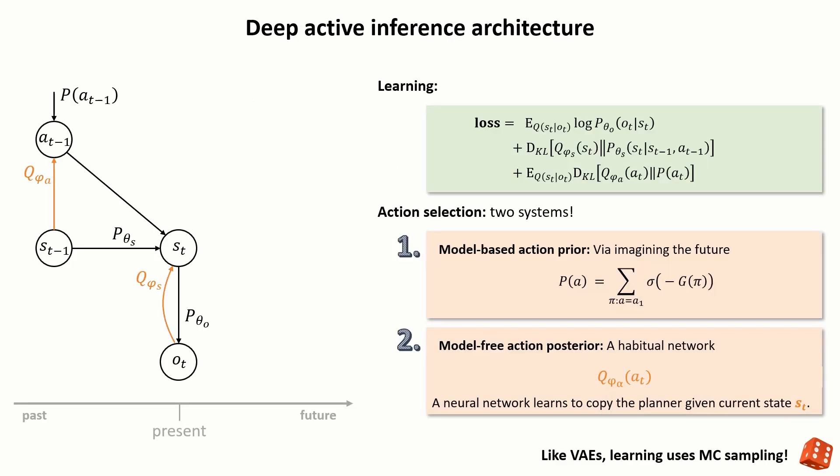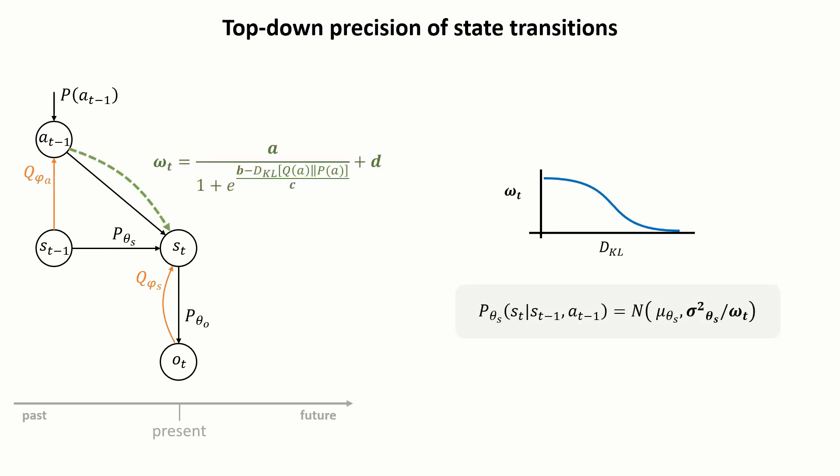Our agent is based on a typical partially observable Markov decision process and possesses two intertwined systems for action selection. First, a planner predicts expected free energy in the future and defines a prior policy, and second, a model-free neural network, which we termed habitual network, learns to map a given state to an approximate posterior policy. Importantly, the divergence between the two policies is propagated as an epistemic precision term to the prior prediction of the next latent state of the agent.